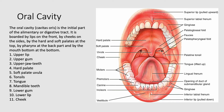The oral cavity is the initial part of the alimentary system or the digestive tract. It is guarded by the lips — upper lip and lower lip — and the cheeks on the sides. The roof is formed by the hard palate in front and the soft palate behind, and the floor features the tongue.